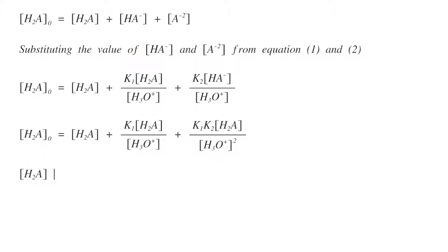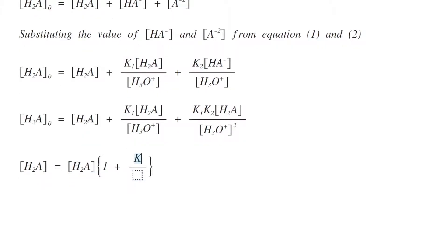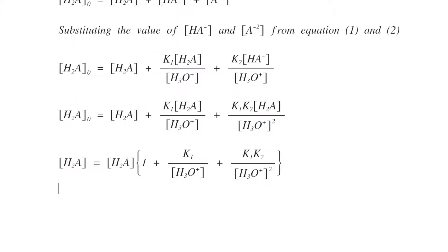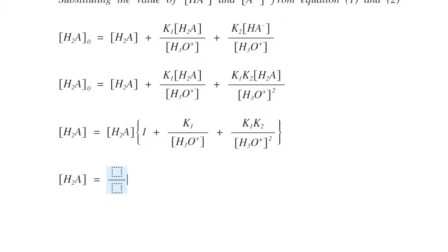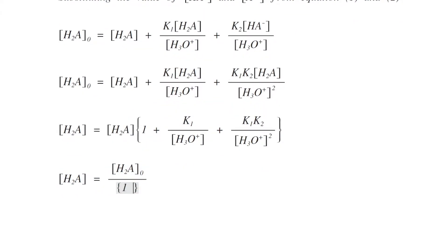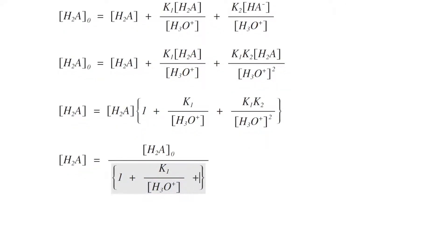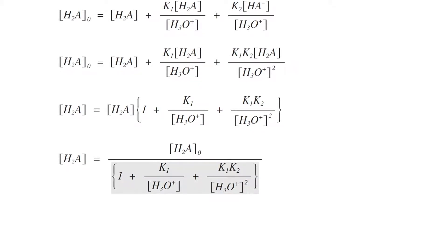Taking [H2A] as a common factor, this becomes [H2A] multiplied by (1 + K1/[H3O⁺] + K1K2/[H3O⁺]²). Therefore, [H2A] equals [H2A]₀ divided by (1 + K1/[H3O⁺] + K1K2/[H3O⁺]²). This is equation number four.